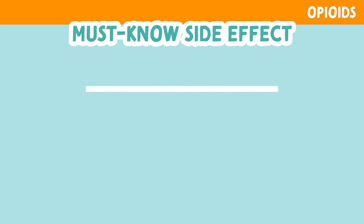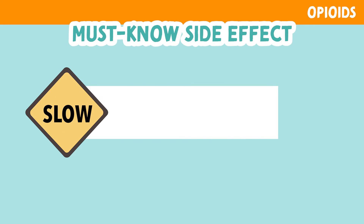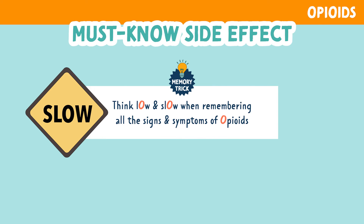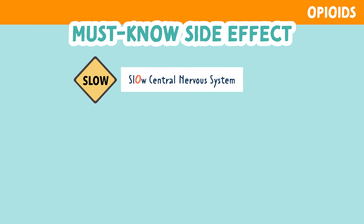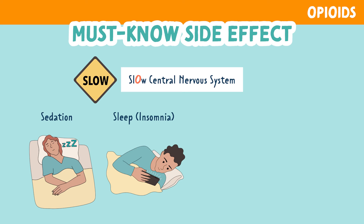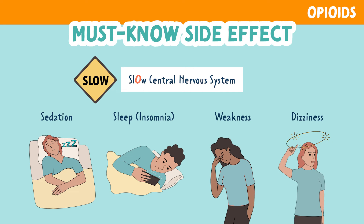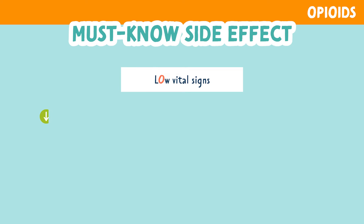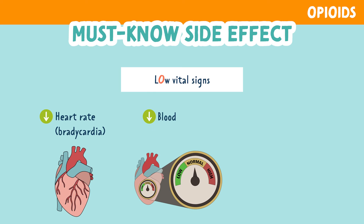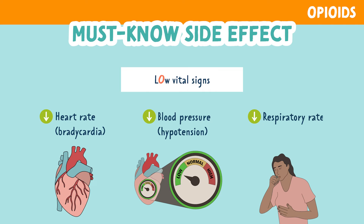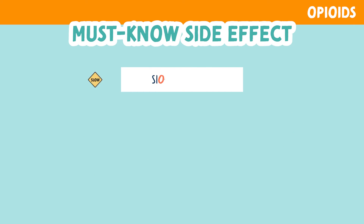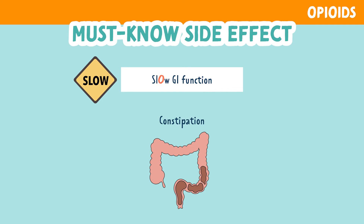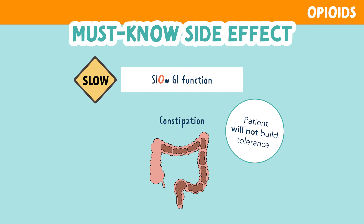Let's talk about the must-know side effects of opioids. Opioids tend to slow down the body — remember the memory trick: think 'low and slow.' We will see a slow central nervous system, which leads to sedation, decreased sleep or insomnia, weakness, and dizziness. We will also see low vital signs such as decreased heart rate (bradycardia), decreased blood pressure (hypotension), and decreased respiratory rate. One of the most serious side effects is respiratory depression. We will also see slow GI function, such as constipation. Importantly, the patient will not build tolerance to constipation — it will occur regardless of the dose.